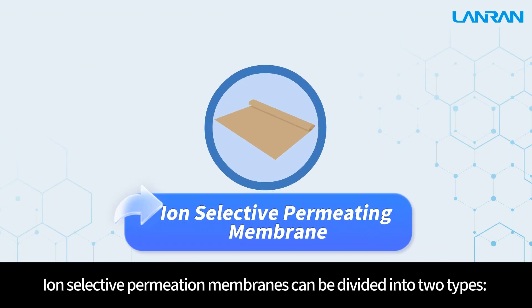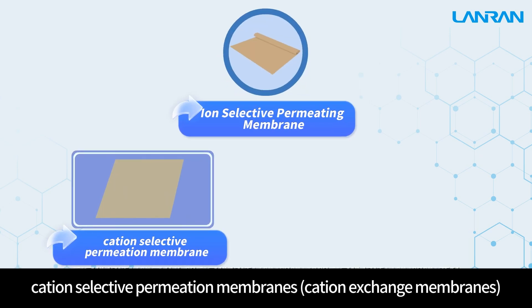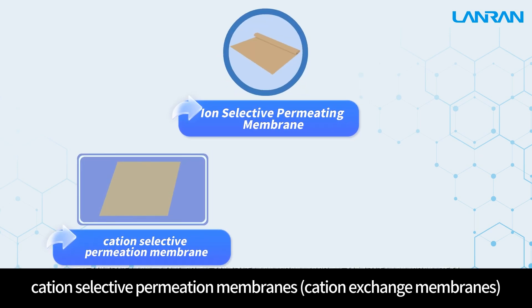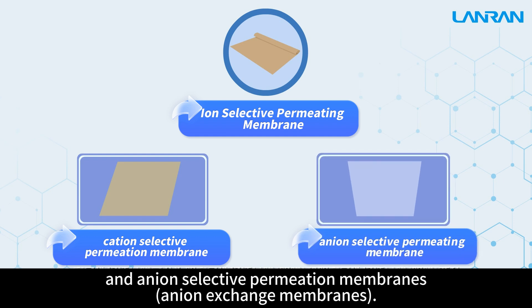Ion selective permeation membranes can be divided into two types: cation selective permeation membranes, cation exchange membranes, anion selective permeation membranes, and anion exchange membranes.